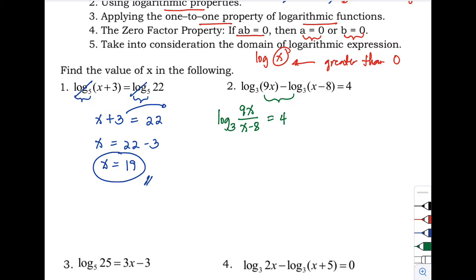After rewriting as a single logarithm, we transform to exponential form: 9x / (x − 8) = 3 raised to 4. Simplifying, 3 to the 4th power equals 81, so we have 9x / (x − 8) = 81.